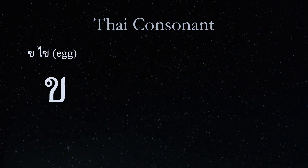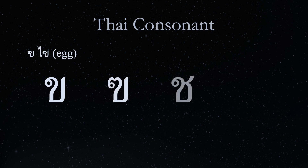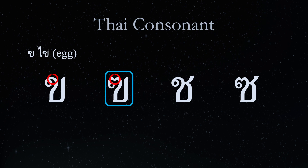Kho Kai may look like Kho Kuat, Cho Chang, and So So. Kho Kuat looks very much like Kho Kai but has an indentation on the curve at the top left corner of the letter.